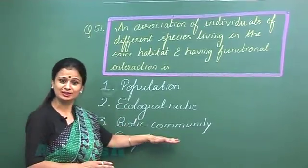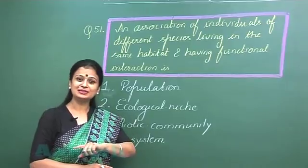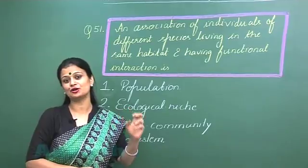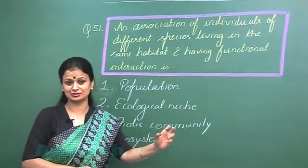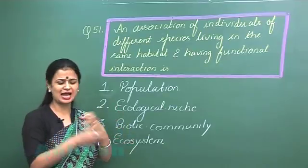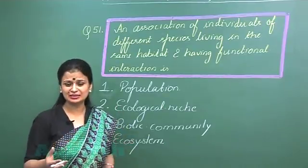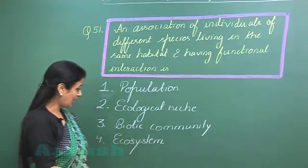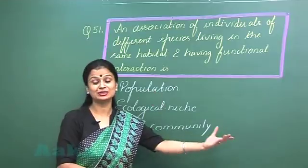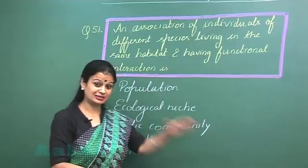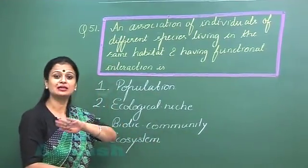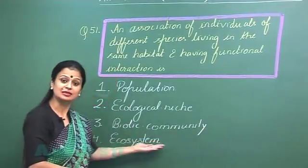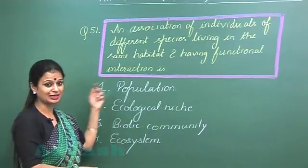Now coming to the biotic community — it is the assemblage of different species: plants, animals, and bacteria, which interact with each other. And when the biotic community interacts with the environment, that is the interaction between the living and the non-living, that represents the ecosystem.